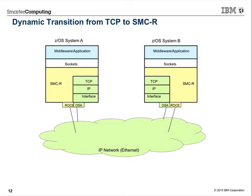Chart 12 illustrates connection management and how the protocol connects. We show two z/OS images each with a TCP stack and an SMCR stack — two parallel stacks — with an IP network. This is a proximity technology, not a wide area network. Both hosts must have access to the same physical network to use RDMA. RDMA is not routable.